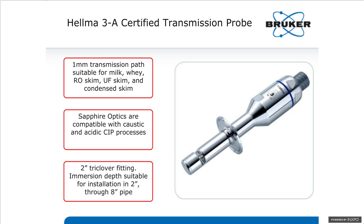Pivoting from the Q412 and reflectance measurements, the HELMA 3A certified transmission probe is a transmission probe with a 1mm path length that allows measurement of milk, whey, RO skim, UF skim, and condensed skim milk. Like the Q412, it uses sapphire optics compatible with caustic and acidic CIP processes. It uses a 2-inch triclover fitting with an immersion depth suitable for 2-inch through 8-inch pipes. It's one of the first probes available that is 3A certified and able to be used through an FTNIR platform.